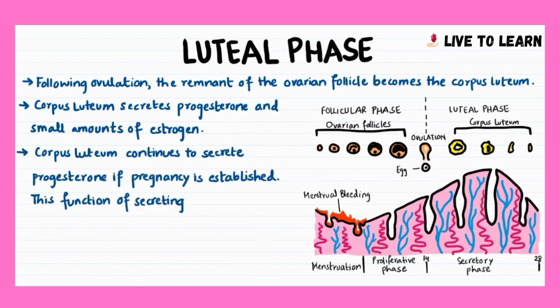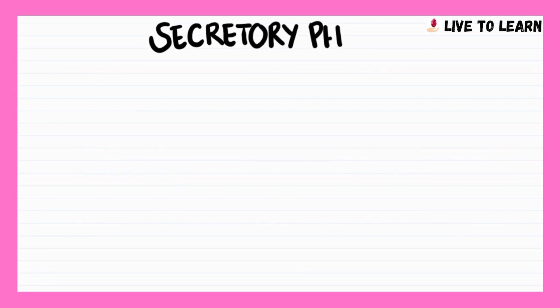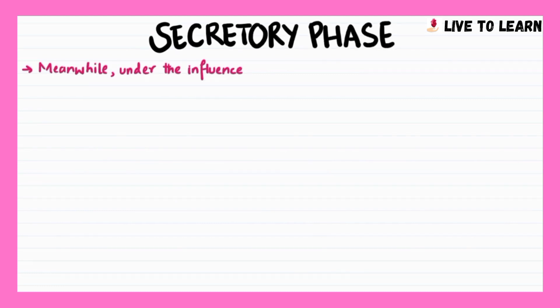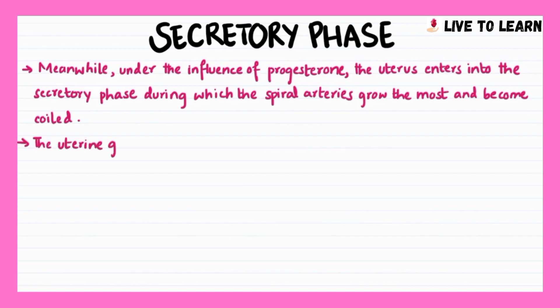If pregnancy does not occur, the corpus luteum degenerates and progesterone levels fall. Under the influence of progesterone, the uterus enters the secretory phase, during which the spiral arteries grow the most and become coiled. The uterine glands begin to secrete more mucus. After day 15, the fertile window begins to close.